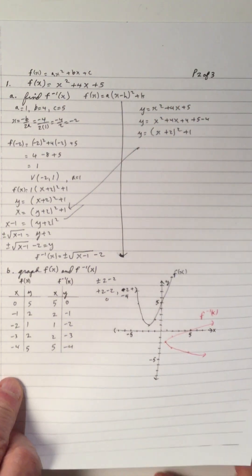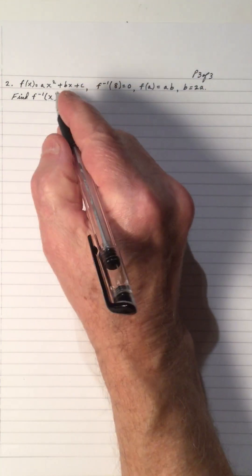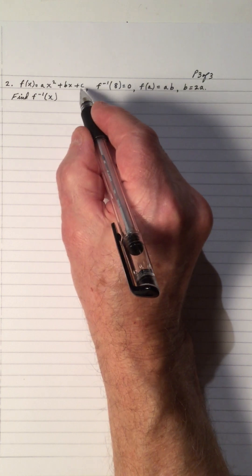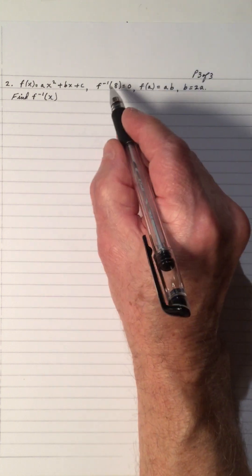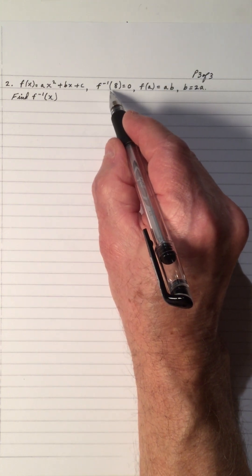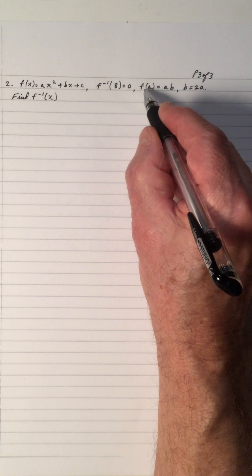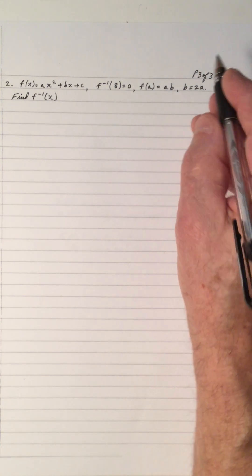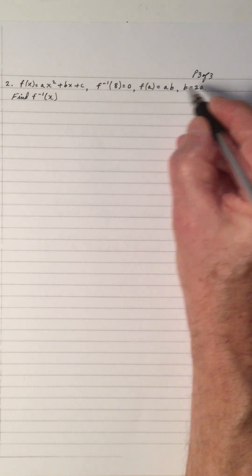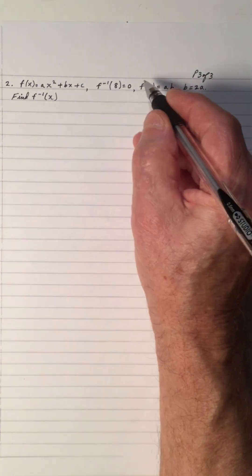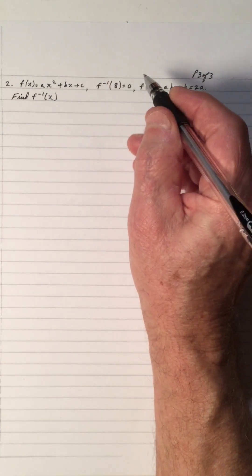I thought I would give you a different question — a similar question, but the start is different. Now we have a question I've made up. F of x equals ax squared plus bx plus c. The f to the negative 1 of 8 is 0. The f of a equals ab. b is equal to 2a. Find f to the negative 1. So we've got to get the f of x first.